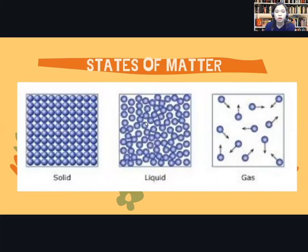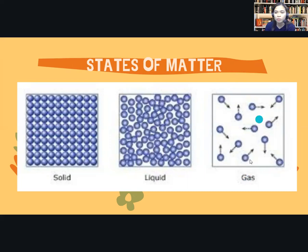In solid, you'll notice the molecules are compact and it has a definite shape. In liquid, the molecules are not as tightly packed and they just follow the shape of their container. In gas, the molecules move freely, like air and carbon dioxide.